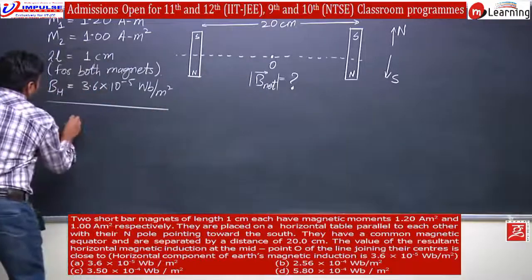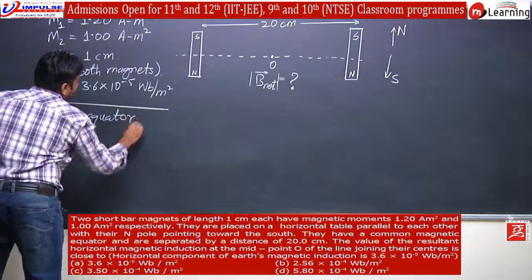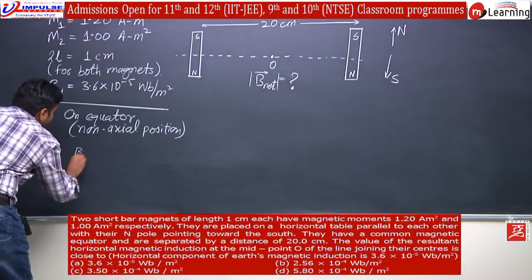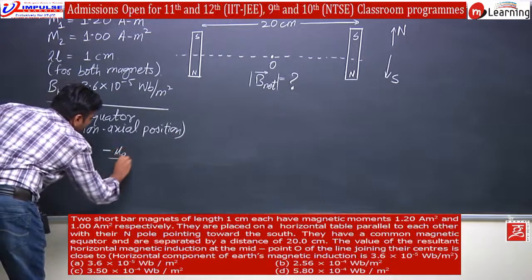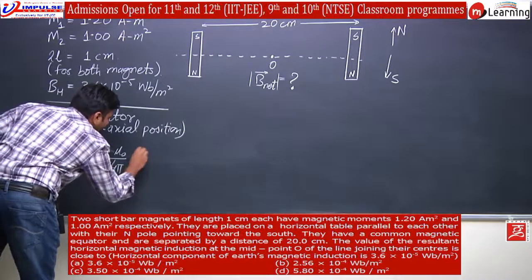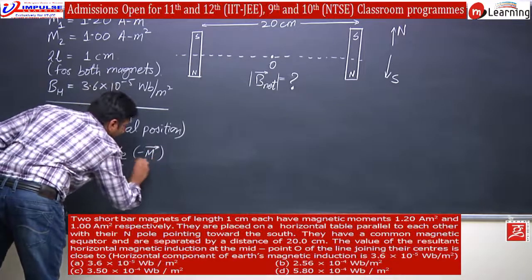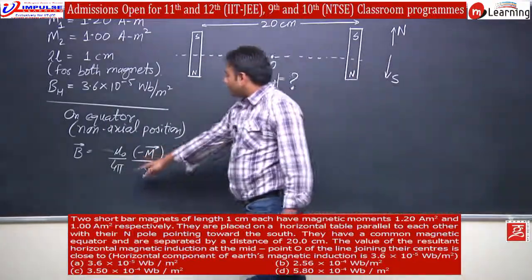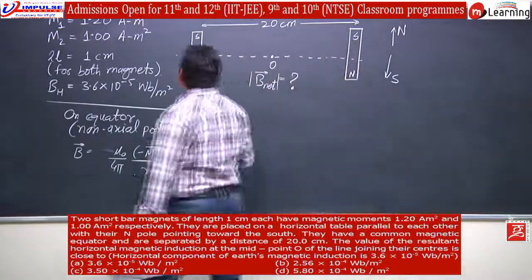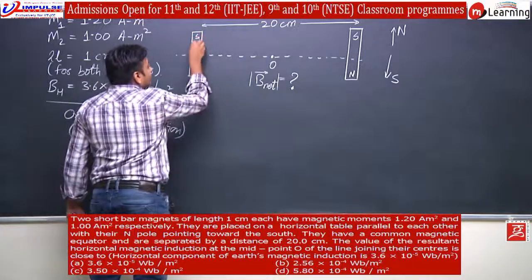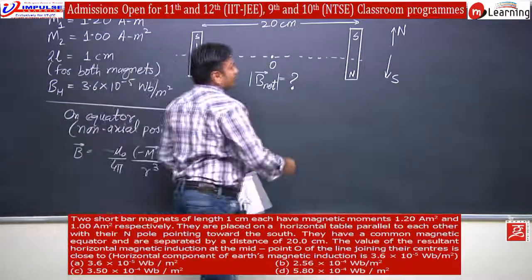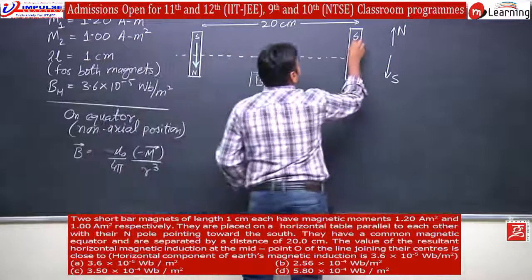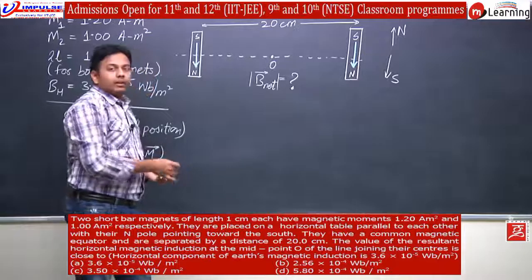We have to recall that on the equator or non-axial position, the magnetic field is given by: B = −(μ₀/4π) × (M vector / r³). This is the M vector — the magnetic moment pointing from south to north, to the left.